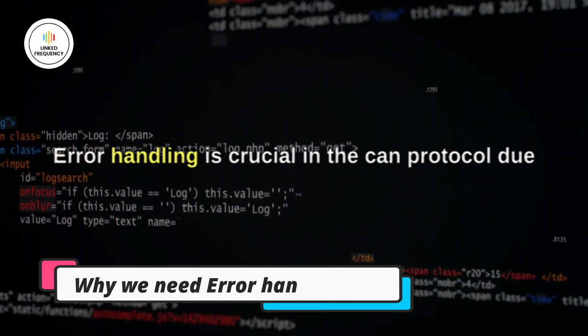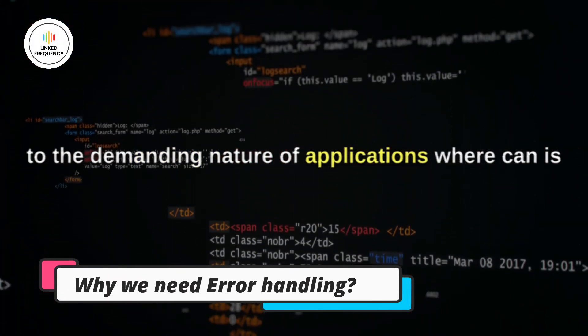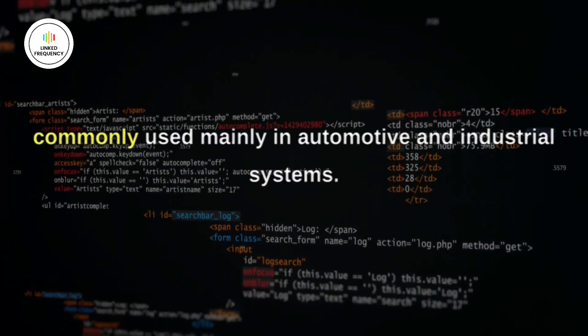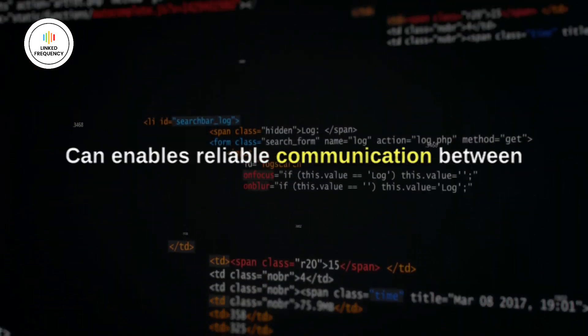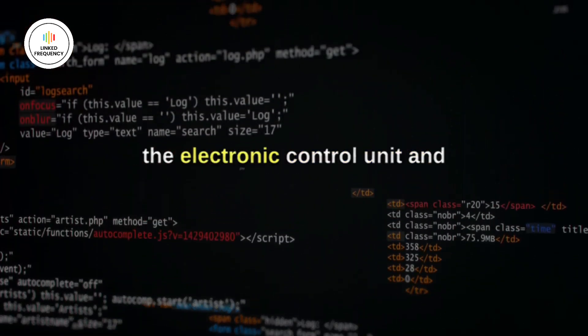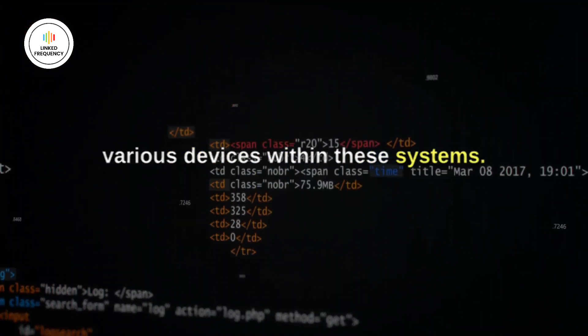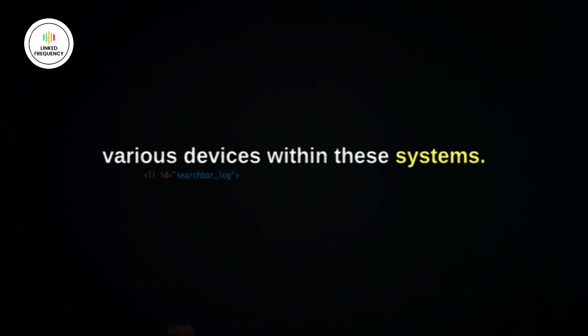Error handling is crucial in the CAN protocol due to the demanding nature of applications where CAN is commonly used, mainly in automotive and industrial systems. CAN enables reliable communication between electronic control units and various devices within these systems.